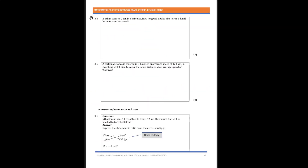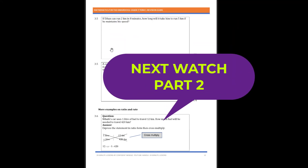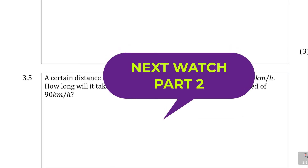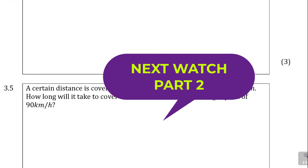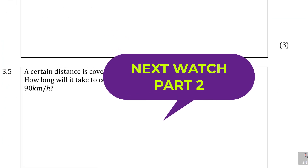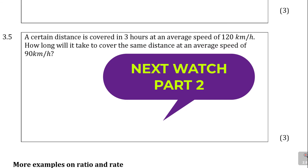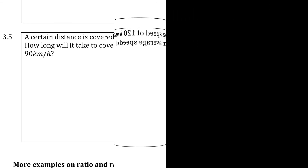We still have questions 3.5 and 3.6 to look at, so stay tuned for the last lesson on this part before we move on to ratio and rate. The next question asks: if Ethan can run 2 kilometers in 8 minutes, how long will it take to run 5 kilometers at the same speed? Another question involves covering a certain distance in three hours at a given average speed. These are worth three marks each — don't miss them in your test or exam. Stay tuned for the next lesson. Thank you.